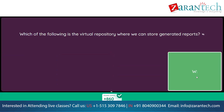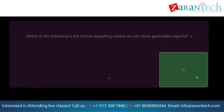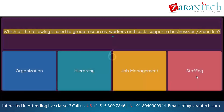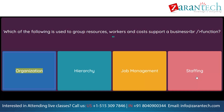Which of the following is used to group resources, workers, and costs to support a business function? Option 1: Organization. Option 2: Hierarchy. Option 3: Job Management. Option 4: Staffing.